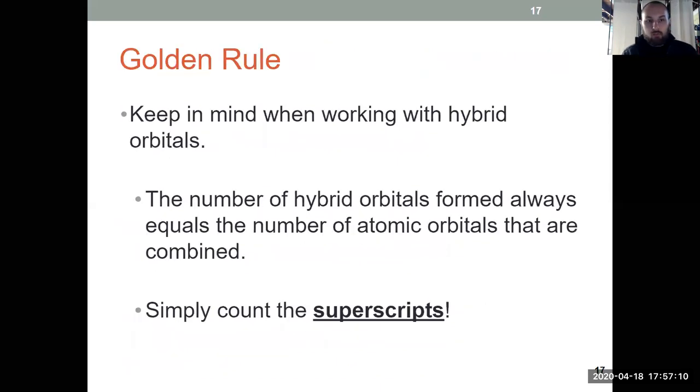So the golden rule to determining hybridization: the number of hybrid orbitals formed is equal to the number of atomic orbitals that went in and were combined. And to determine the hybridization, we just need to think about superscripts. That's a golden rule to get our hybridization state.